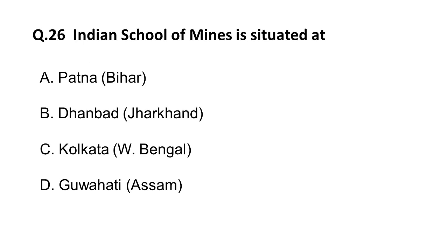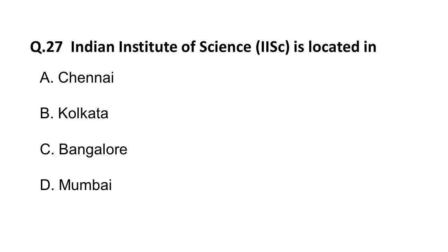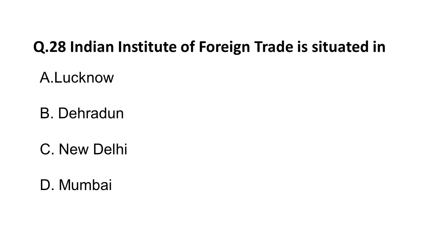Indian School of Mines is situated at — options are Patna, Dhanbad, Kolkata, Guwahati. The correct answer is Dhanbad in Jharkhand. Next: Indian Institute of Sciences — if you know IISc Bangalore, it is the topmost institute recognized in the Indian and international arena. The correct answer is Bangalore. Next: Indian Institute of Foreign Trade is situated in — options are Lucknow, Dehradun, New Delhi, Mumbai. The correct answer is New Delhi.